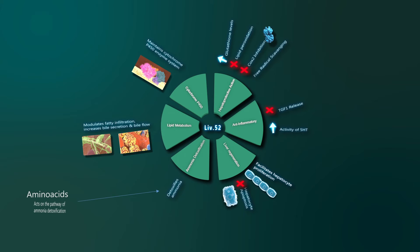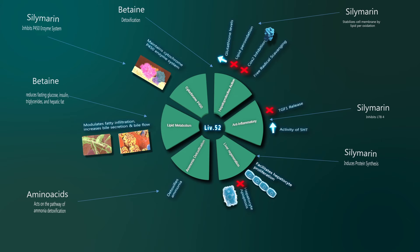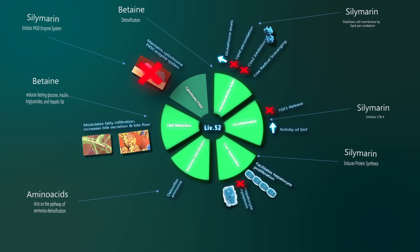By comparison, amino acids only remove ammonia, and betaine only helps in detoxification. Silymarin inhibits lipid peroxidation, shows anti-inflammatory activity, and enhances regeneration, but it inhibits the cytochrome P450 enzyme system. Thus, LIV-52 provides complete hepatoprotection to maintain normal liver health.